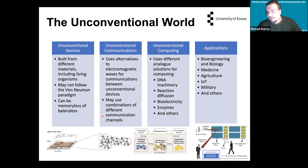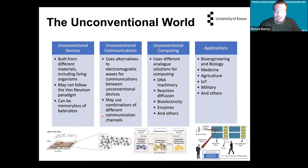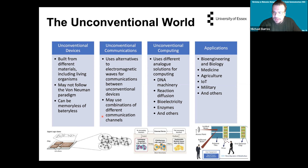Unconventional devices are built not exclusively based on silicon and conventional materials — you may include some living organisms as well. They may also not follow the von Neumann paradigm. You don't really need to store information to have a device, or may not have a battery to actually actuate or develop a device. And that unconventional computing becomes very important, especially if we're building devices made of living organisms, to provide more complex solutions for information processing and transmission.